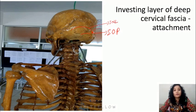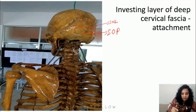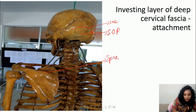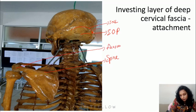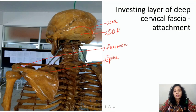Inferiorly it is attached to the acromion process and spine of scapula. We can see the spine of scapula here, and the spine continues to form the acromion process. That is about the attachment of the investing layer of deep cervical fascia on the posterior aspect.